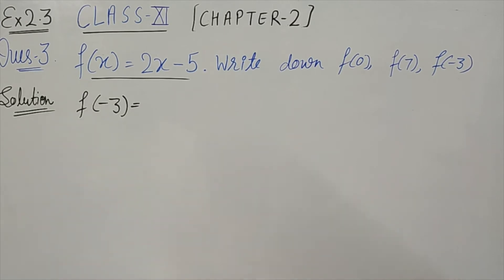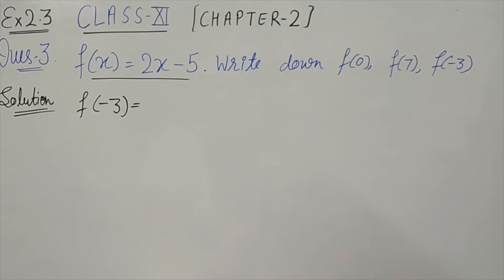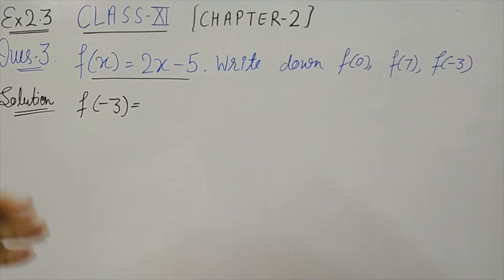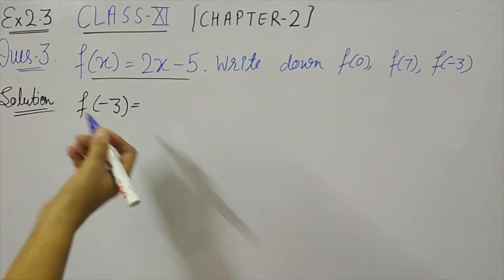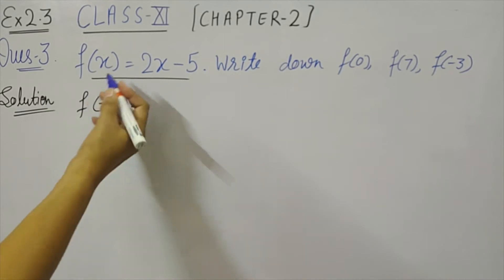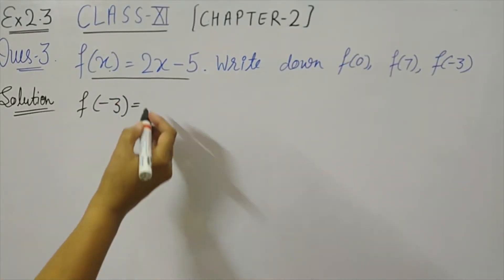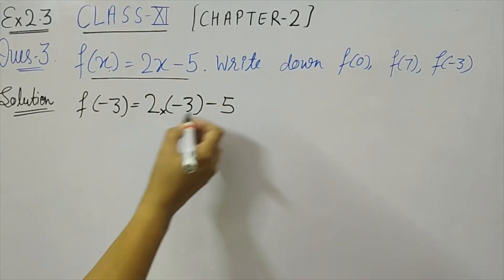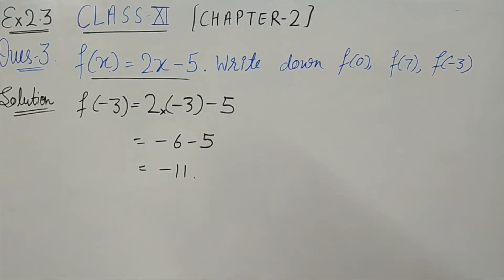Question 3: the function is given as f(x) = 2x − 5. We need to find f(0), f(7), and f(−3). These are quite simple questions, so I am taking only f(−3). We replace x by −3: 2×(−3) − 5 = −6 − 5 = −11. That is the answer.